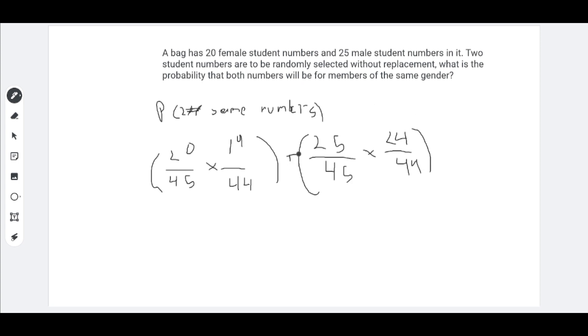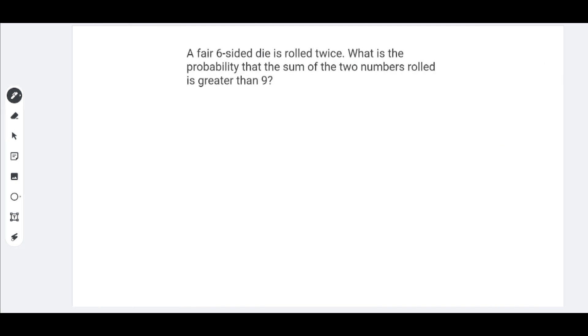So, now we just have to add these probabilities. If I put this entire fraction into a calculator, I'd get forty-nine over ninety-nine, or point four nine five, which is forty-nine point five percent chance that we get two numbers of the same gender. Now, forty-nine out of ninety-nine and forty-nine point five percent are both the answer. Let's move on to the next problem.